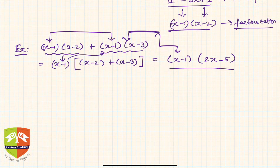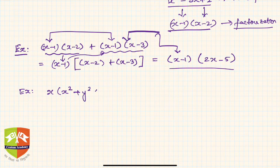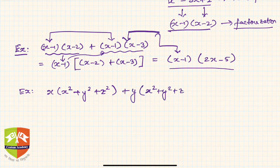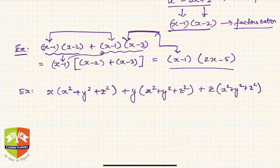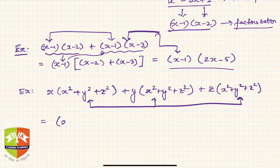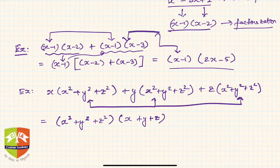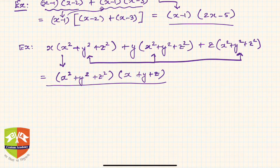Another example: x(x²+y²+z²) + y(x²+y²+z²) + z(x²+y²+z²). We can see the common factor (x²+y²+z²) across all three terms, so we write it as (x²+y²+z²)(x+y+z). This converts a non-factored form into a factored form.